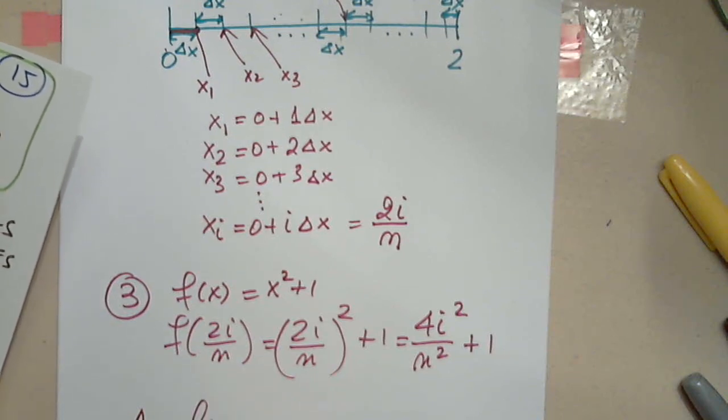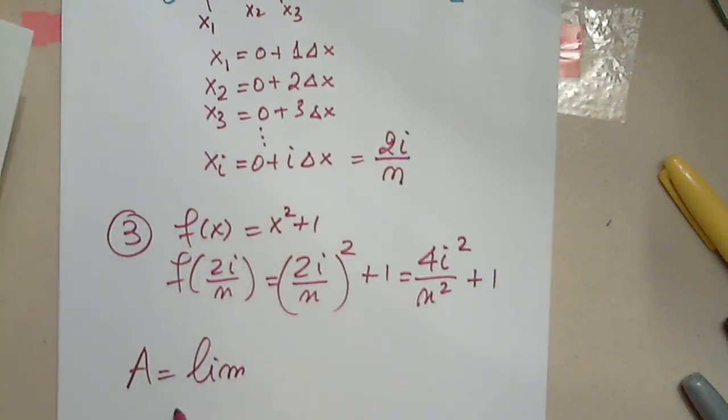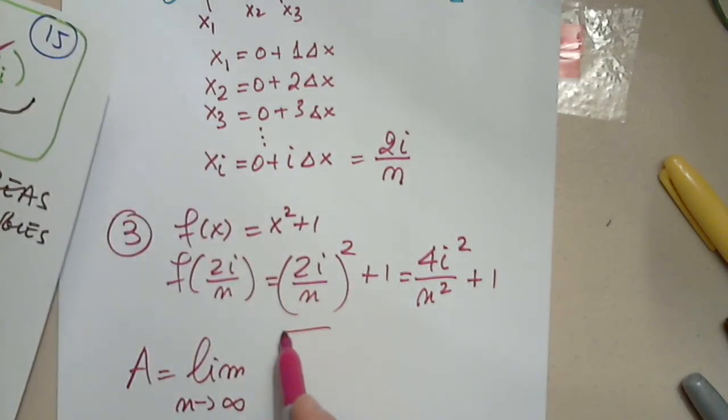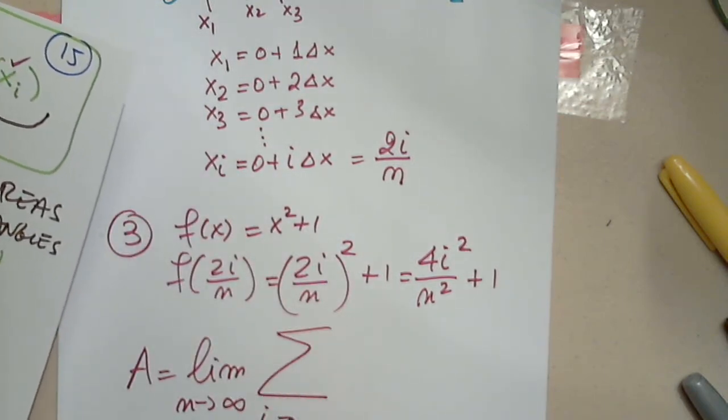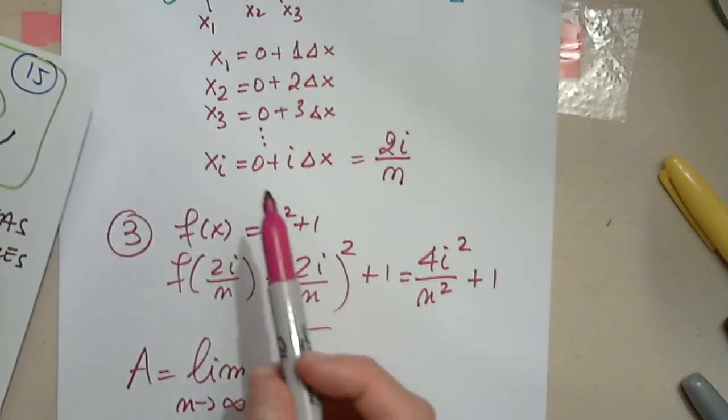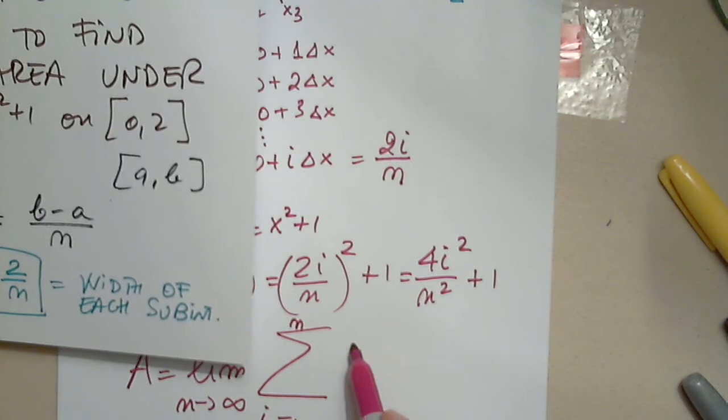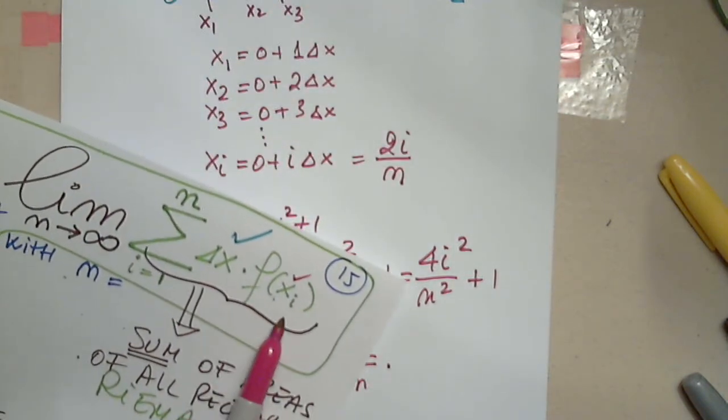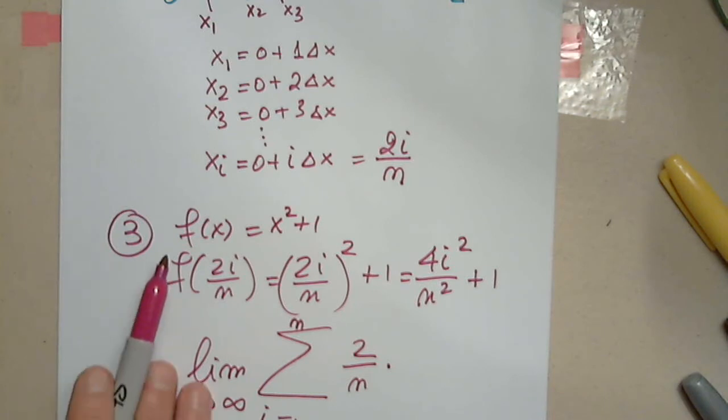A equals the limit as n approaches infinity of the summation notation from i equals 1 through n, delta x, my delta x is 2 over n, and multiply by f of x_i, exactly what I got in step 3.